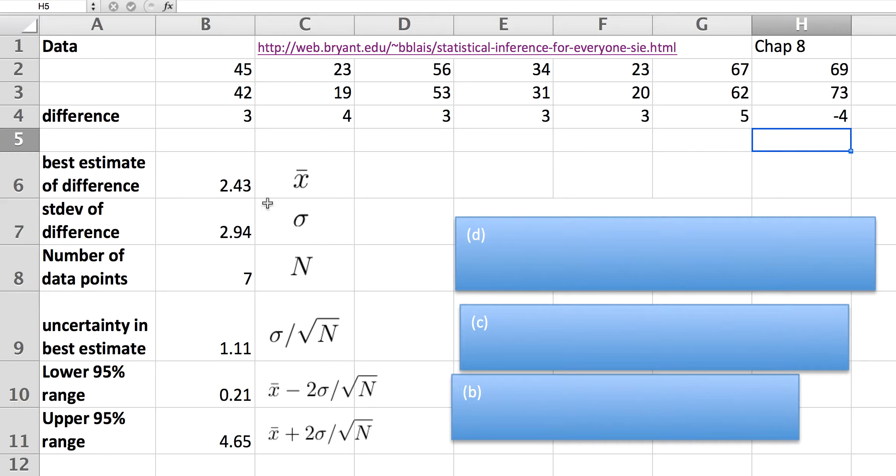In order to calculate our uncertainties in our best estimate, we actually need the number of data points. I just count up how many there are. I could use the count function if I wanted to. The uncertainty in our best estimate is given by the standard deviation over the square root of the number of data points.